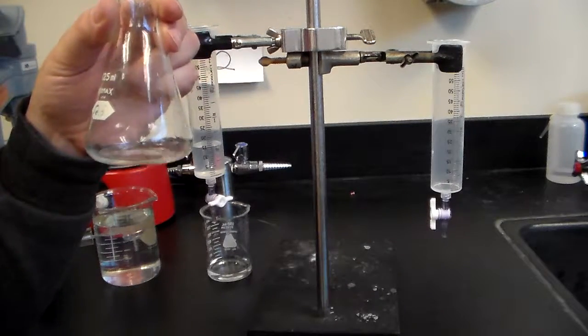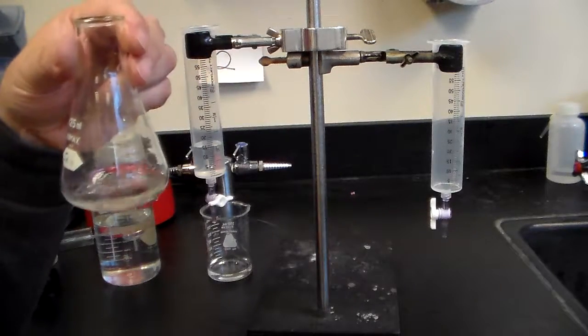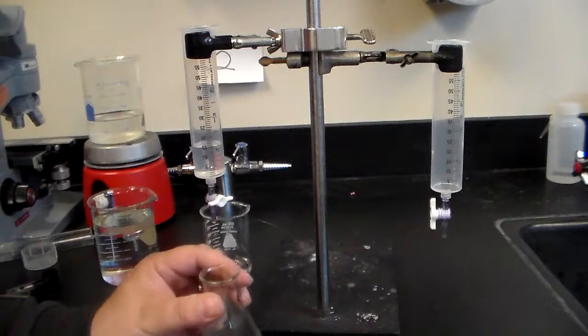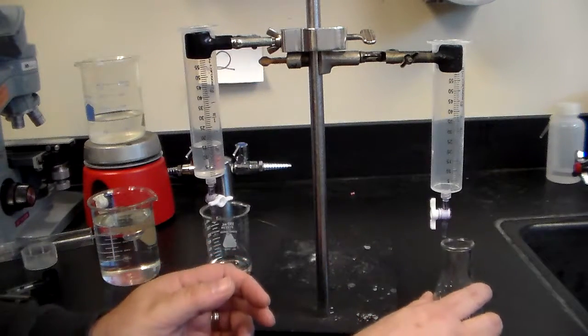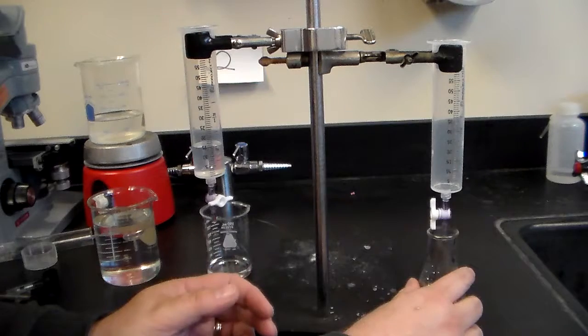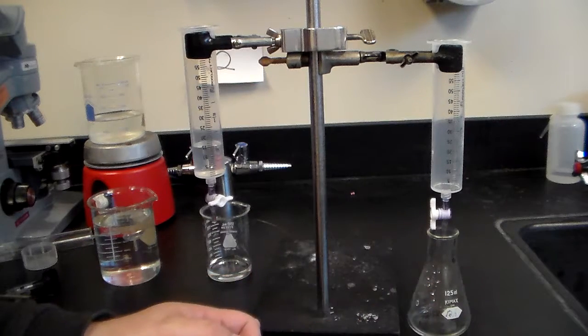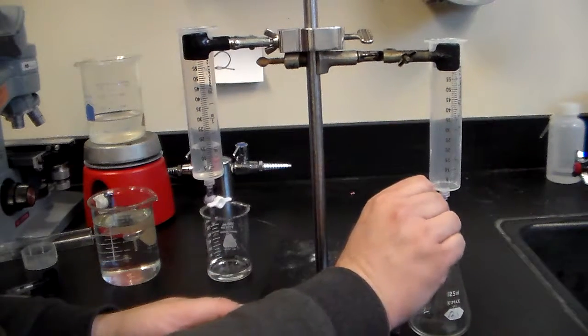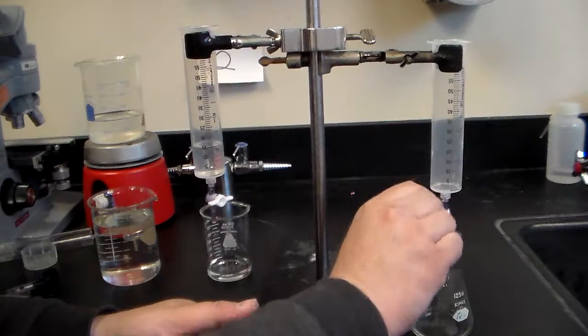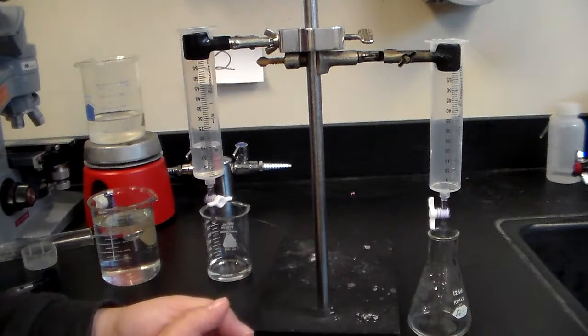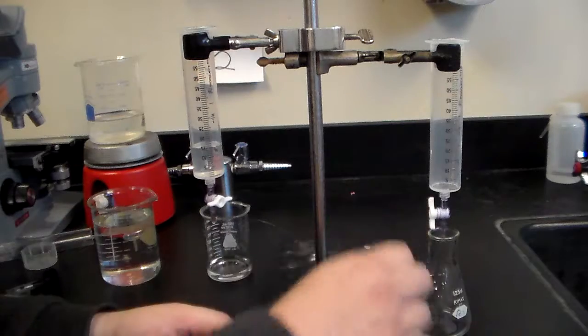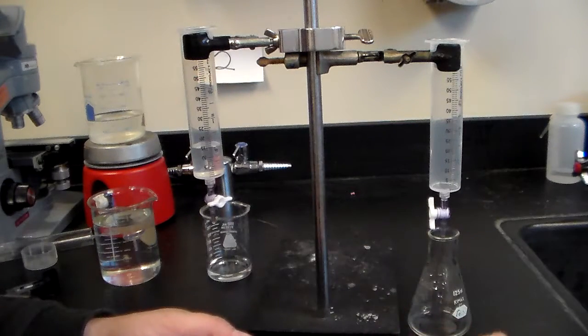Now comes the tricky part, and that's where titrating really comes in. You're going to put your flask underneath the other burette and you are going to turn this just a little bit so you're getting a drop at a time. Then you're going to have to close it and you're going to have to swirl it to get it mixed thoroughly.